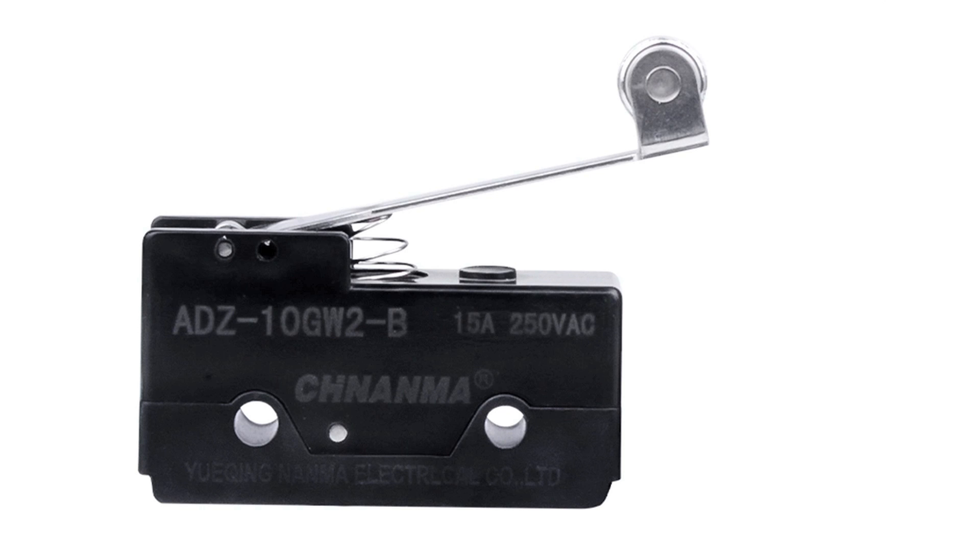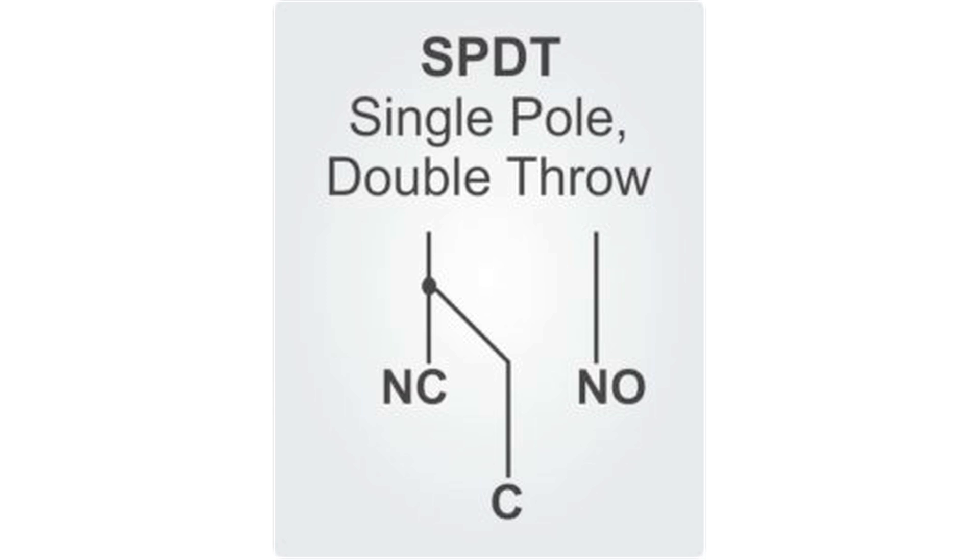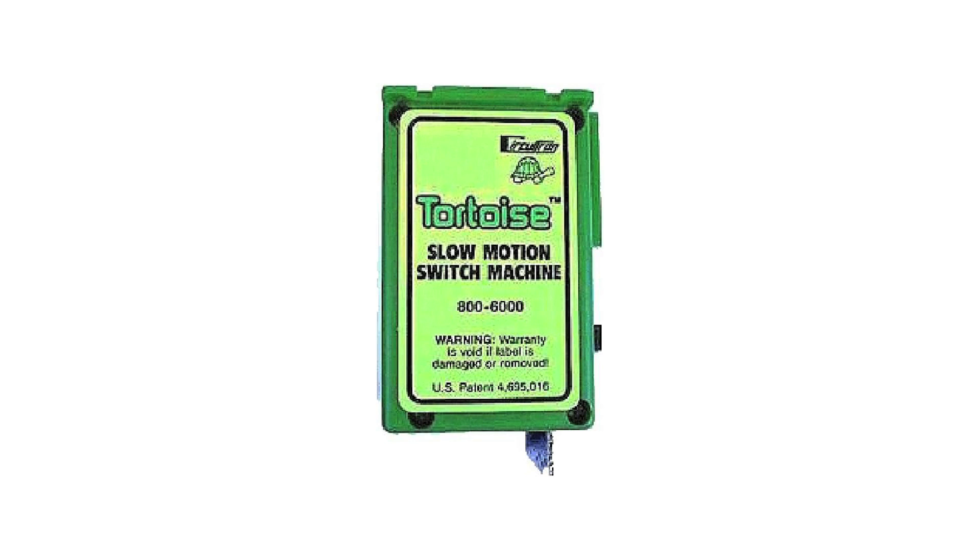We pointed out that you can do that by adding a single pole double throw micro switch, similar to this one, somewhere in your linkage—your mechanism that's going to throw the points—and use that as a switch to control the power to the frog. By single pole double throw we mean a switch that is able to route power from a central connection to either one side or the other depending on how you throw the switch.